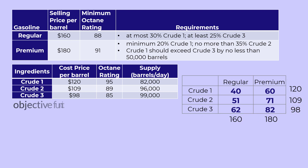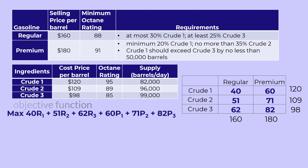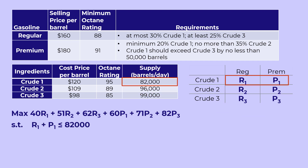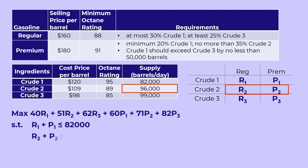The objective function can thus be presented as follows. For the constraints, we can start with the available supply of the crudes. For crude 1, we write R1 plus P1 less than or equal to 82,000. Less than or equal because we cannot use more than the available supply. We do the same for crude 2 and for crude 3.